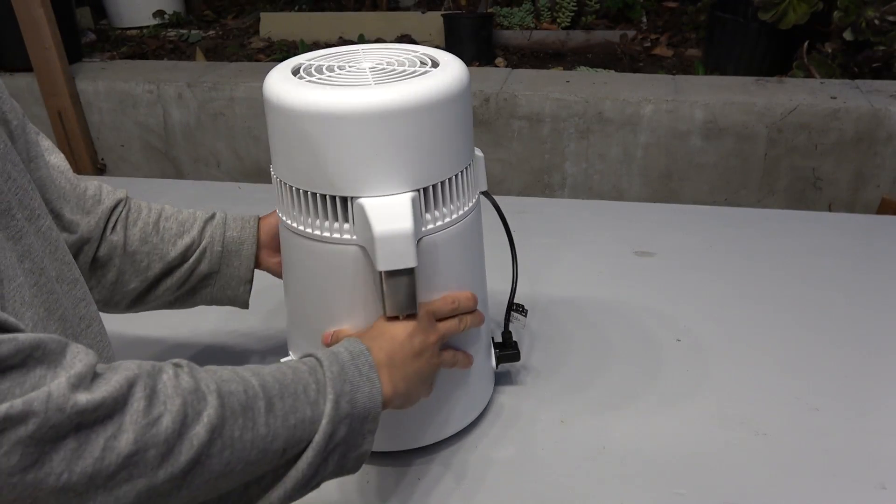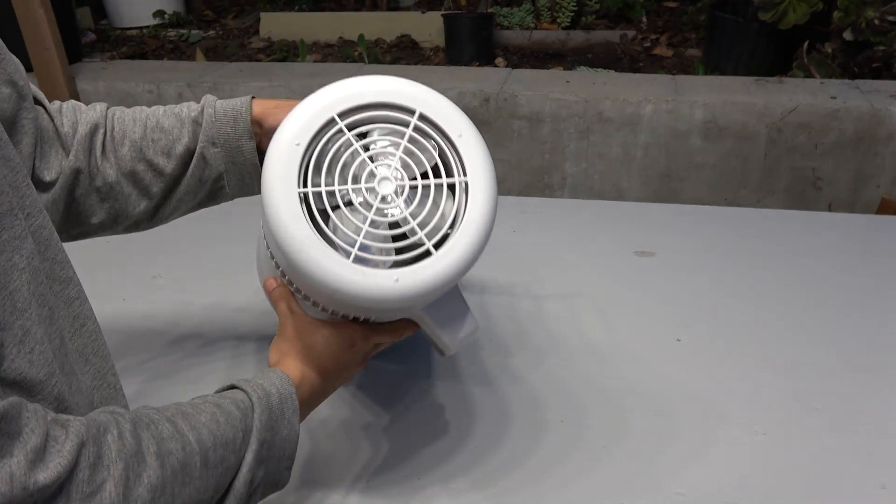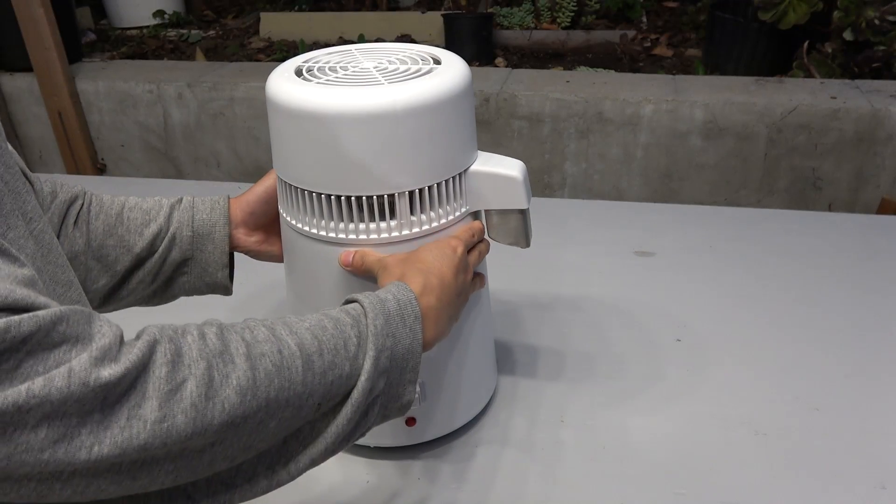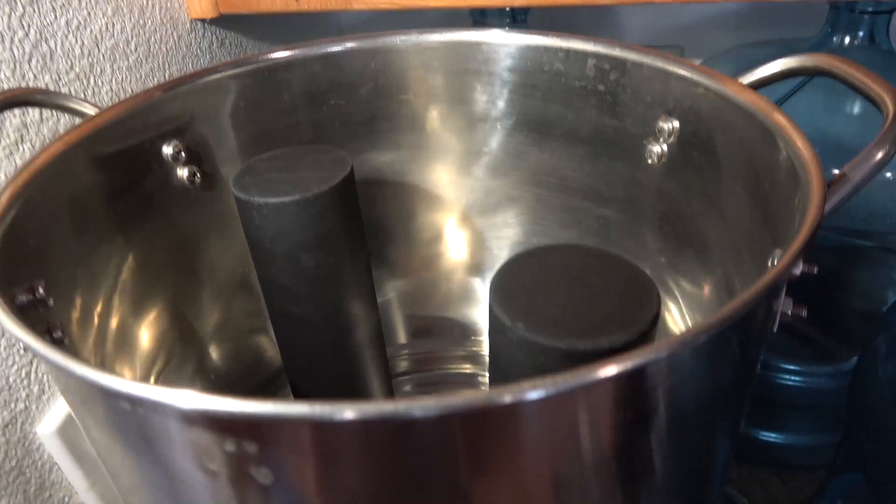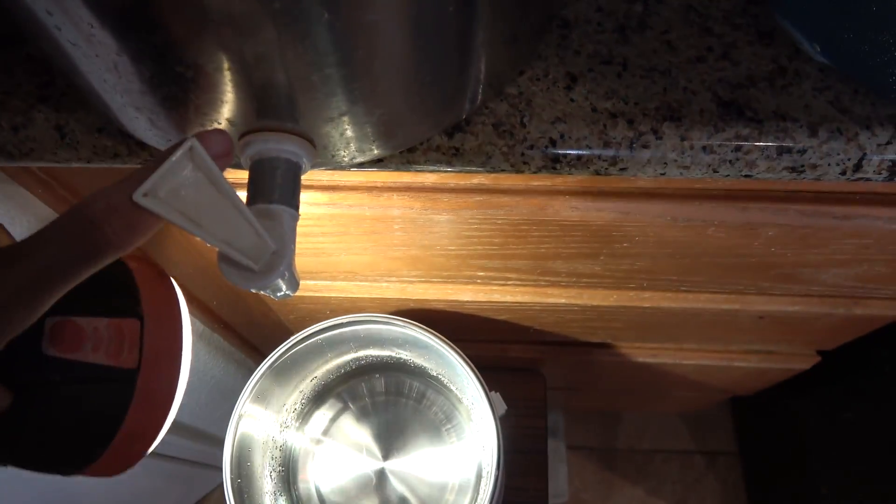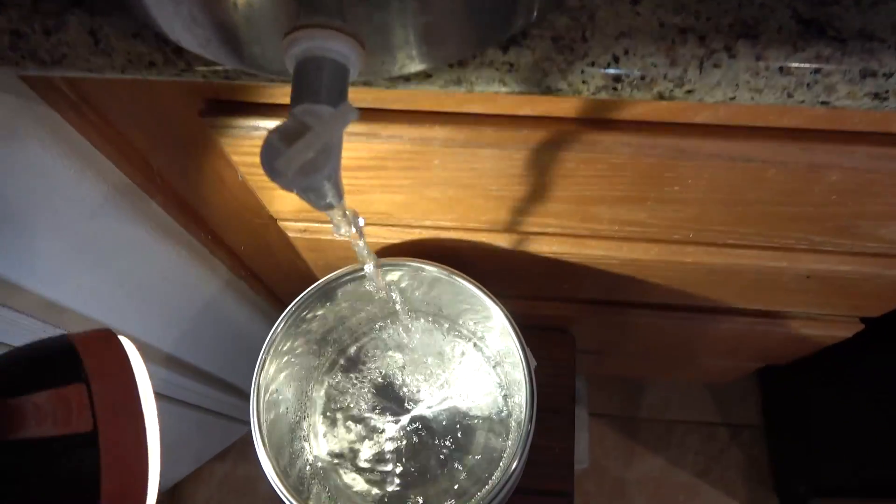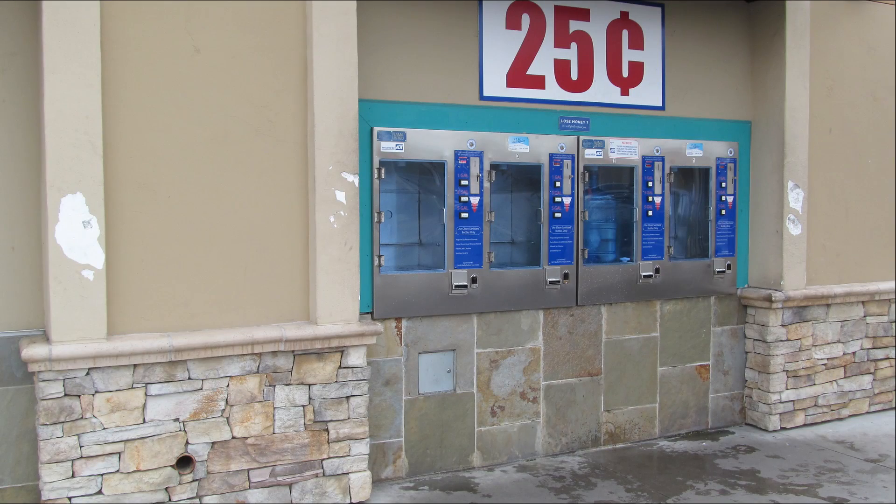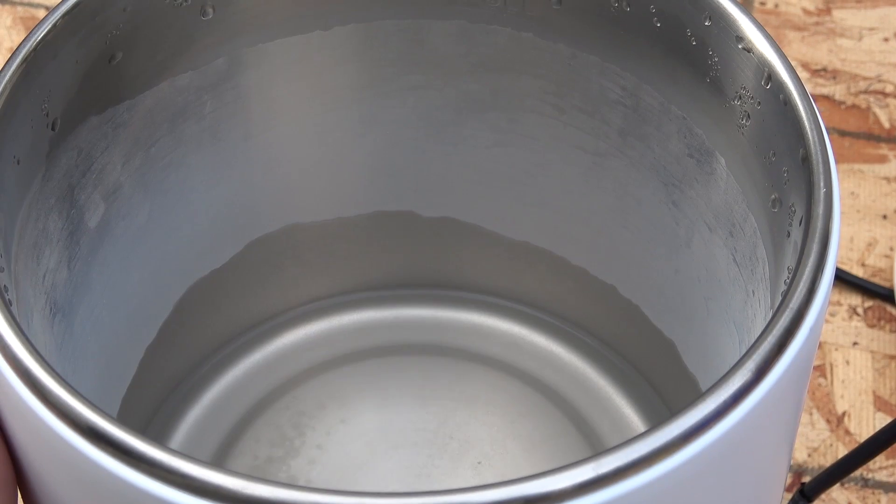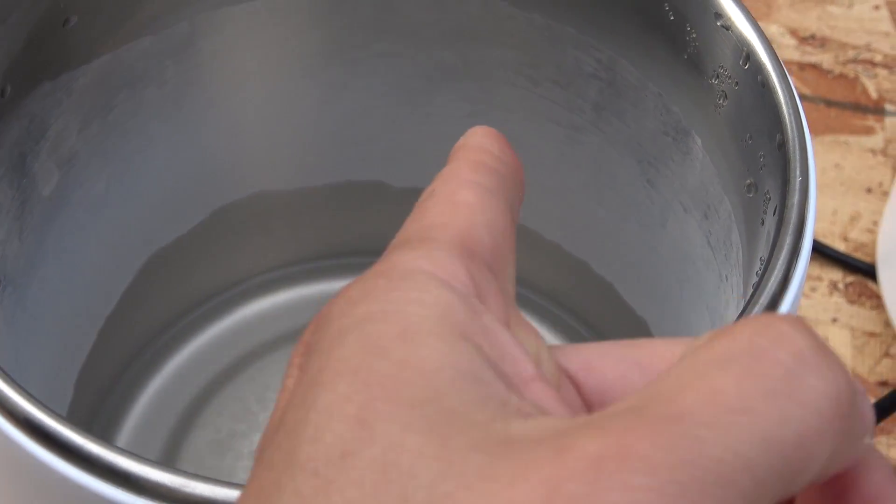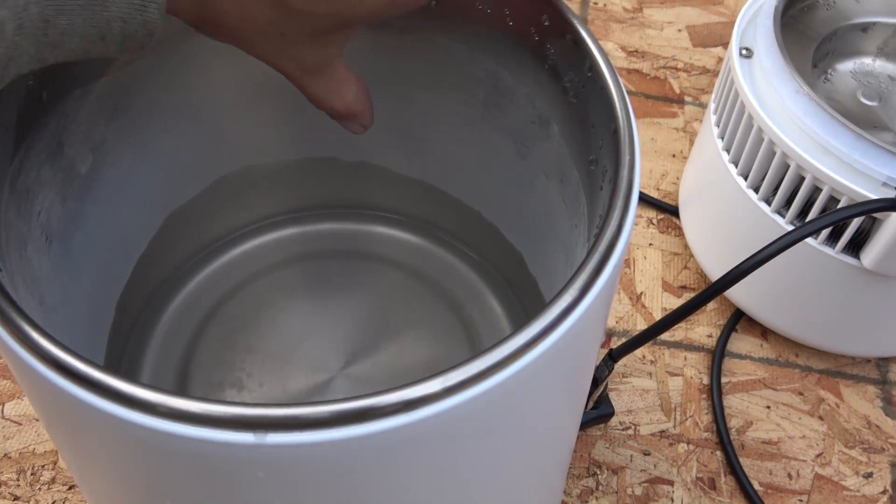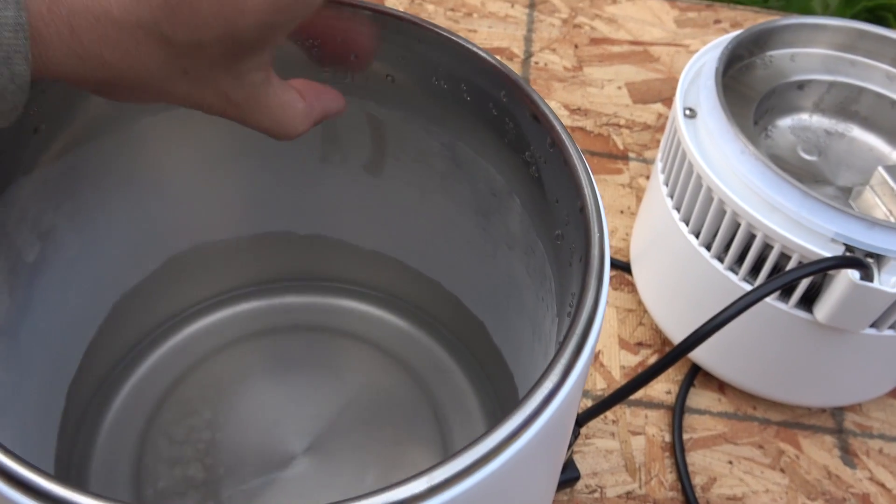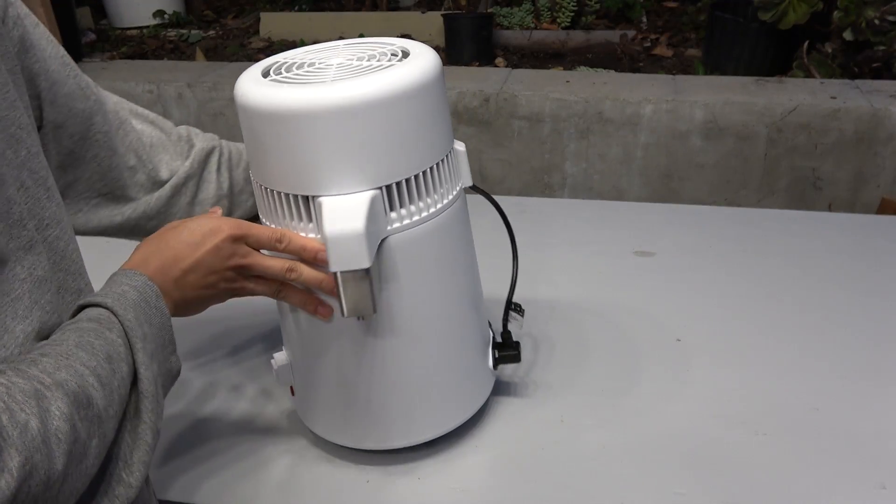Today I'm going to be reviewing the eBay one gallon water distiller. I'm also going to distill a variety of water sources: tap water, Berkey water filter, and filtered water purchased from a water store. You'll be surprised by what is left in the pot after the distillation. Let's find out how it works and how good it is.